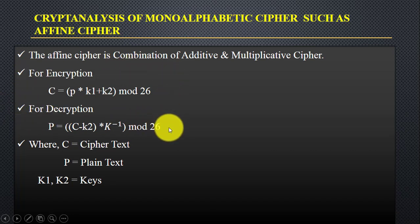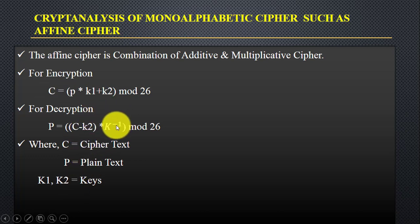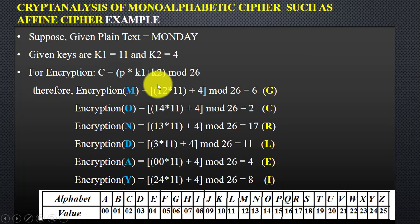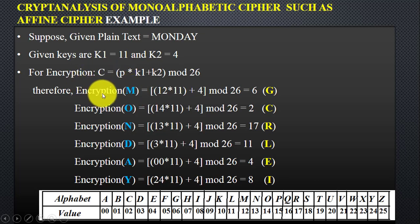For encryption of plaintext, the formula is: C = (k1 × P + k2) mod 26, where C is the ciphertext, P is the plaintext, and k1, k2 are the keys. For decryption, the multiplicative modulo inverse of k1 is used. In our example, the plaintext is 'one day,' with keys k1 = 11 and k2 = 4. We encrypt character by character.